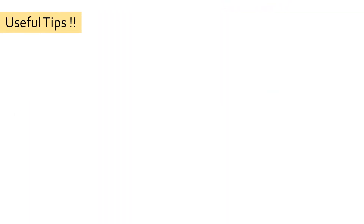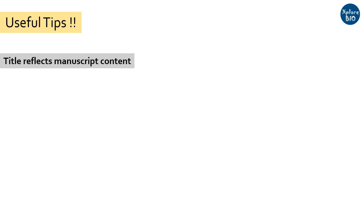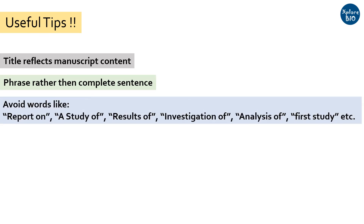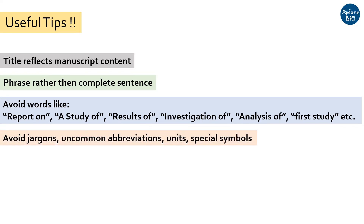Now, some of the important tips to consider while framing a good title. A title should be framed in such a way that the manuscript actually delivers what is highlighted by the title. A title is usually a phrase and not a complete sentence. Avoid using phrases like 'report on,' 'a study of,' 'results of,' 'investigation of,' 'analysis of,' 'the first study,' etc. Also avoid using jargons, uncommon abbreviations, units or special symbols.